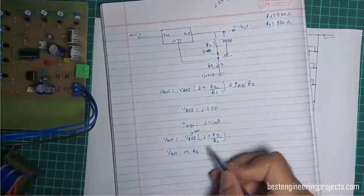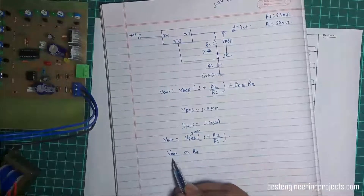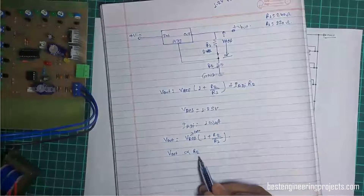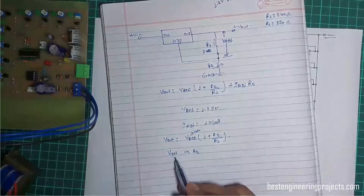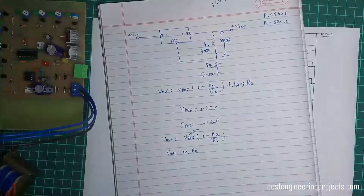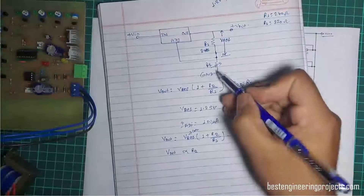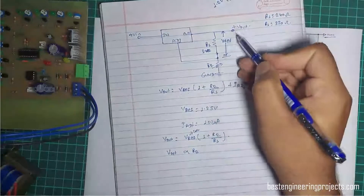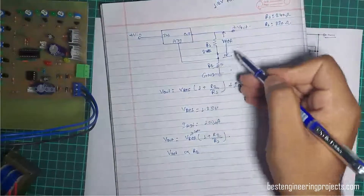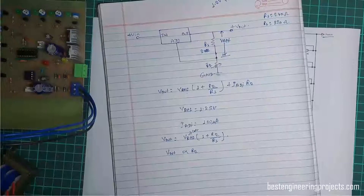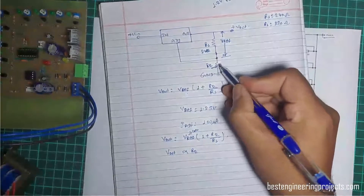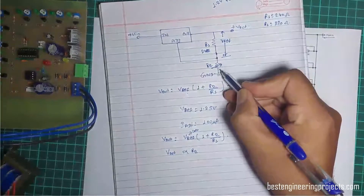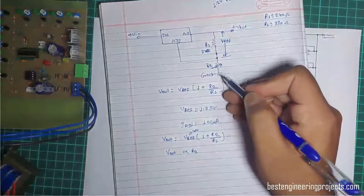If we increase the value of R2, the value of Vout also increases. So the basic principle is: by varying resistor R2, the output voltage can be varied. In this universal digital power supply, we vary this variable resistor by switching different transistors, as you can see in the circuit diagram.